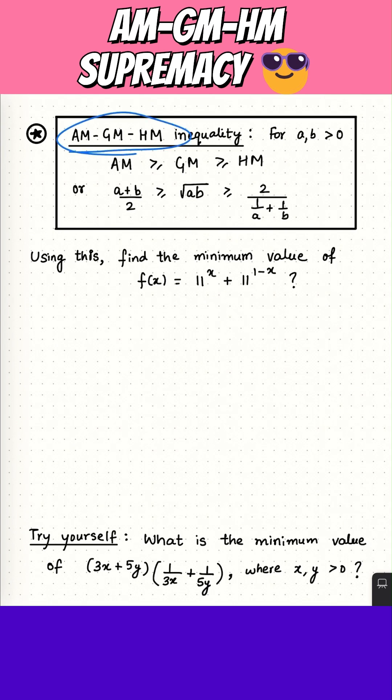We already know the classic AM-GM-HM inequality, which says arithmetic mean is always greater than or equal to geometric mean, and which is always greater than or equal to harmonic mean.